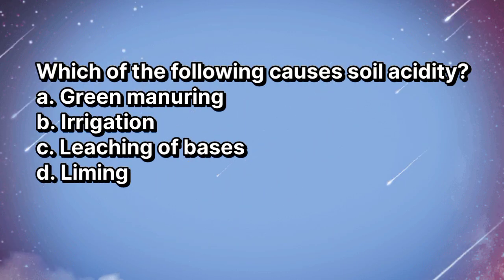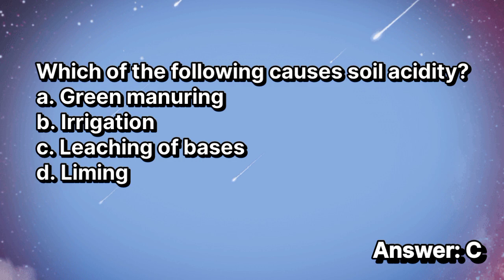Which of the following causes soil acidity? A. Green manuring. B. Irrigation. C. Leaching of bases. D. Liming. The answer is letter C.